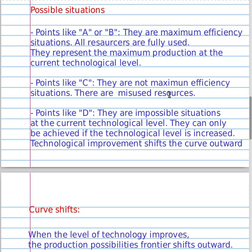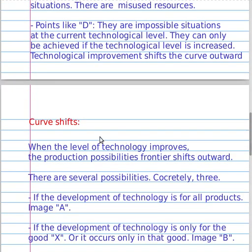When the level of technology improves, the production possibilities frontier shifts outward. There are several possibilities, concretely three, that show this situation.